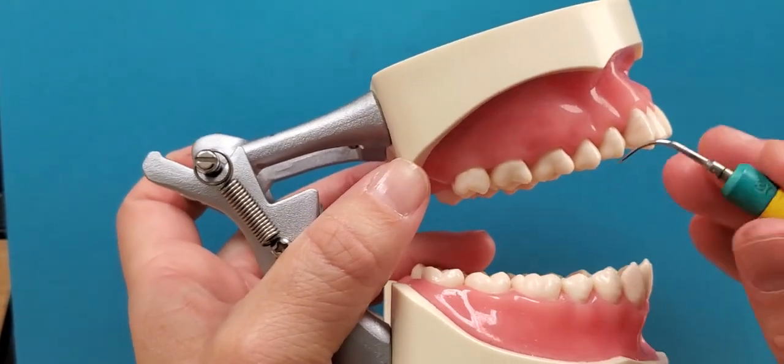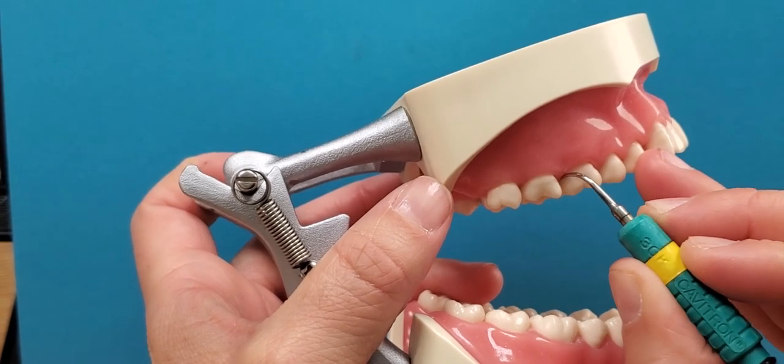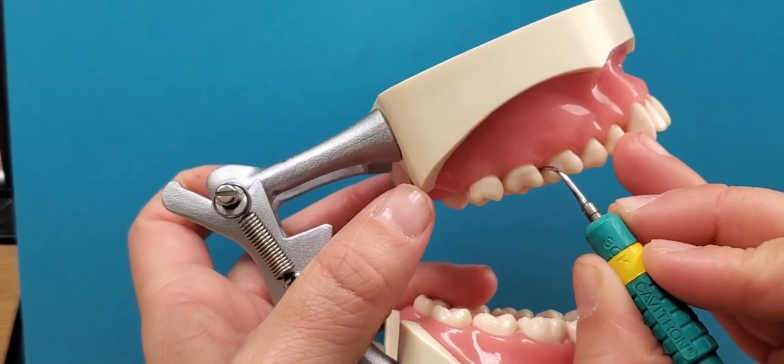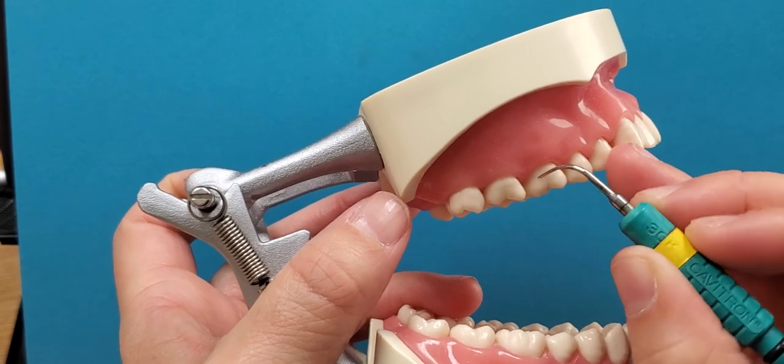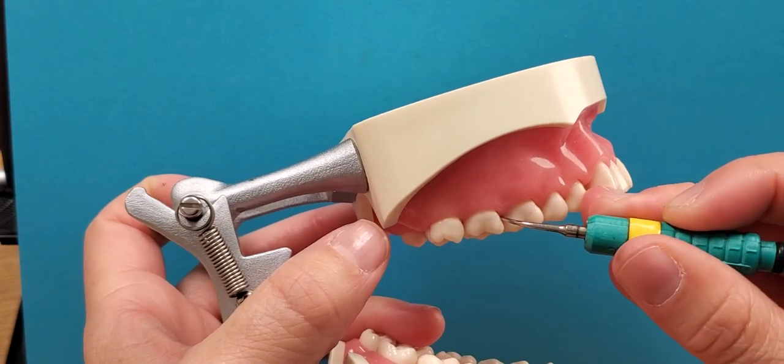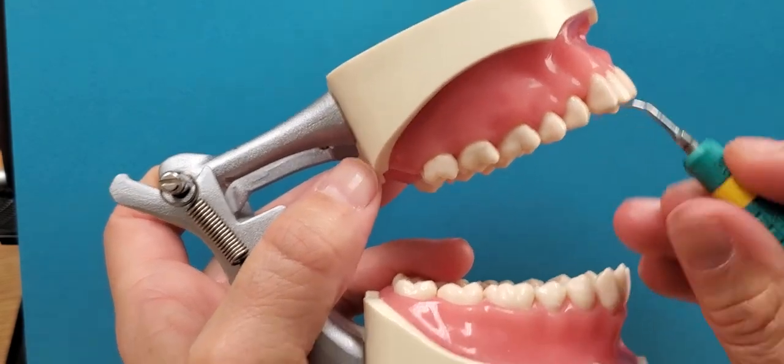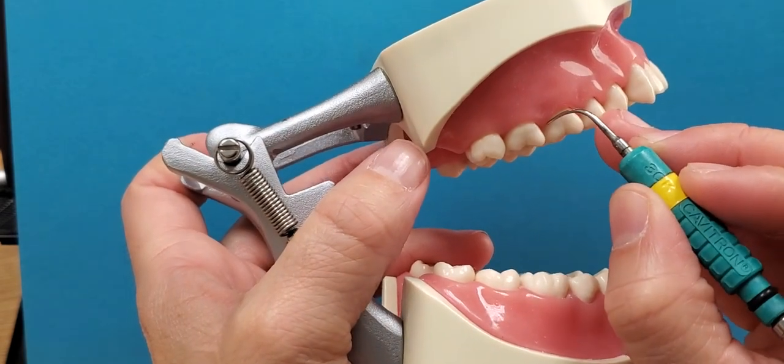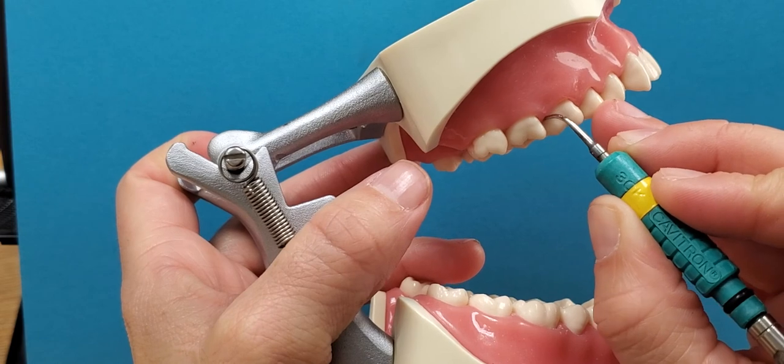When you are using curette style instrumentation you need to remember that you want to keep the lateral sides of the instrument on the tooth. Sometimes we see people position the instrument this way, and if you do this then you have the face of the instrument adapted to the tooth. So with curette style you want to keep lateral side against the tooth.